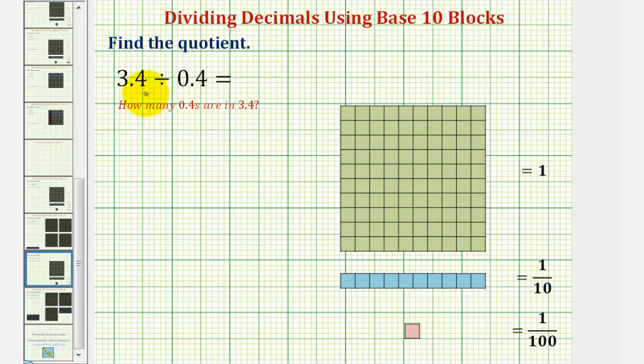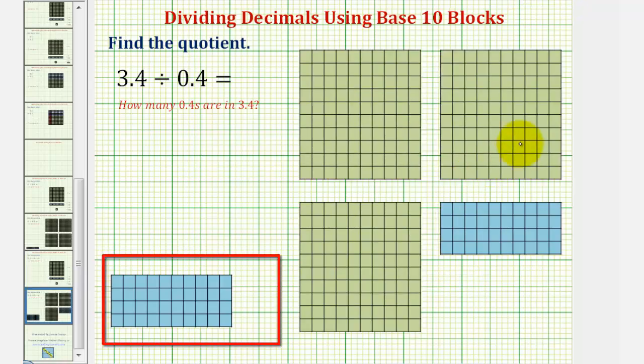We'll begin by modeling 3.4, which would be three flats for three and four longs for 0.4. So here's our model for 3.4. Because we're dividing by 0.4, which again can be modeled using four longs as we see here.